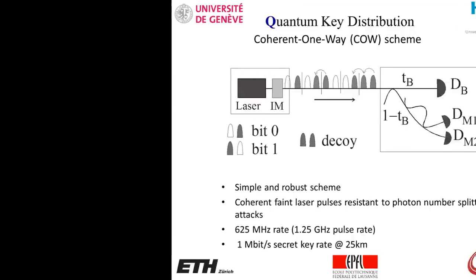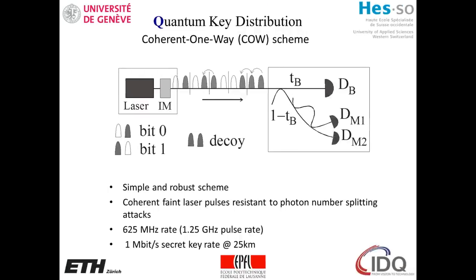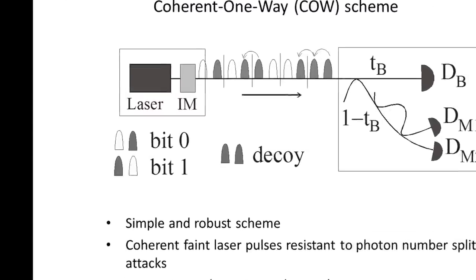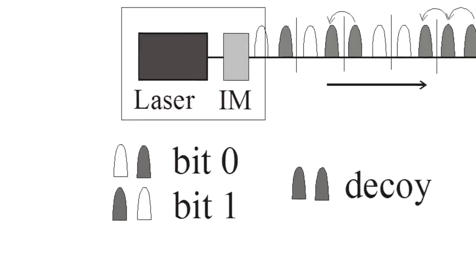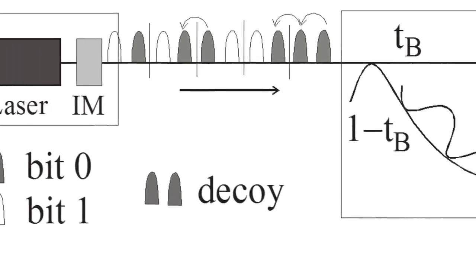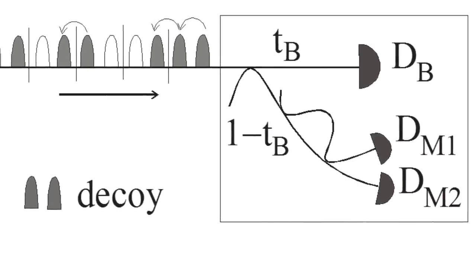Thanks to an intensity modulator, we cut pulses out of this continuous wave. Some pulses — shown in white — are empty pulses: we simply block the light. The non-empty pulses have actually less than one photon on average, which starts to sound quantum. We then decide on a simple coding scheme: for instance, a particular sequence of a pair codes for zero and another sequence codes for one. On the receiving side, you simply have a single photon detector that detects whether the arrival time is even or odd, telling you whether you had a zero or one.